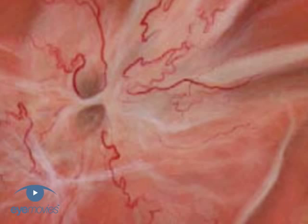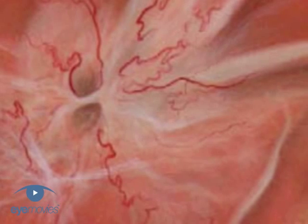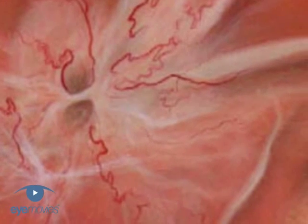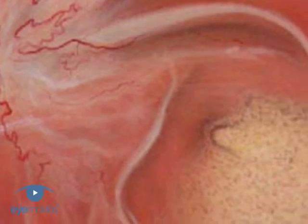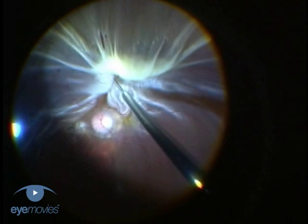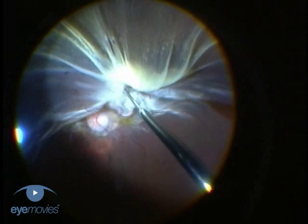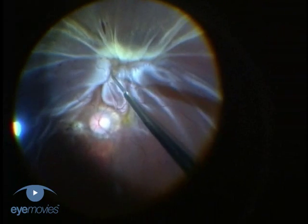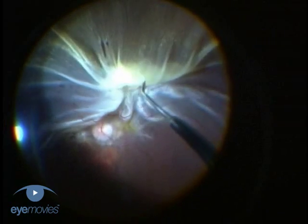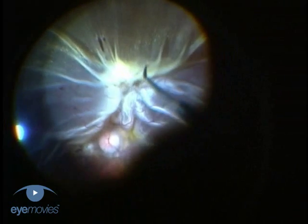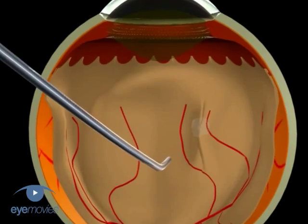Starfolds which are not close to retinal breaks may be left alone, but those within one clock hour of a retinal break pull on the break and may prevent break closure. Starfolds are removed by peeling. Peel centrifugally whenever possible, as the posterior retina is tough on the periphery and will be better able to withstand the mechanical stress.